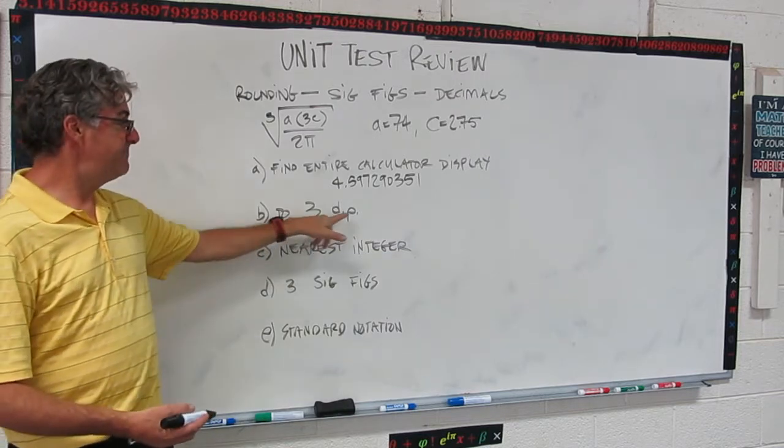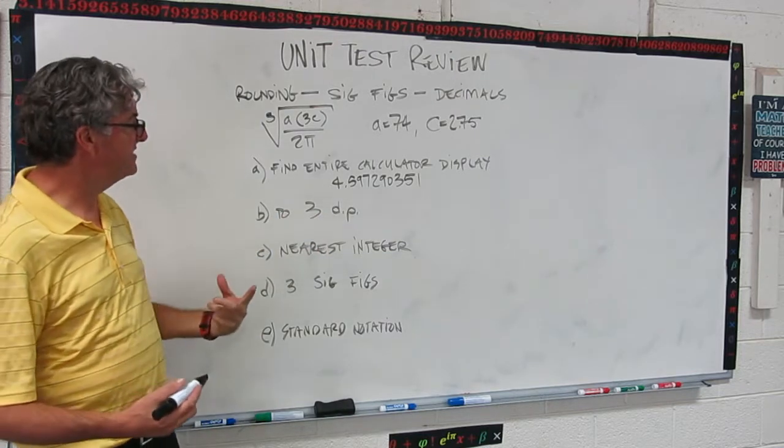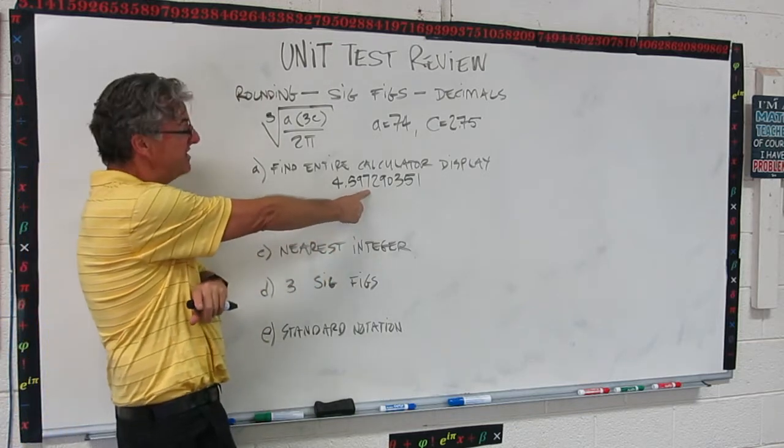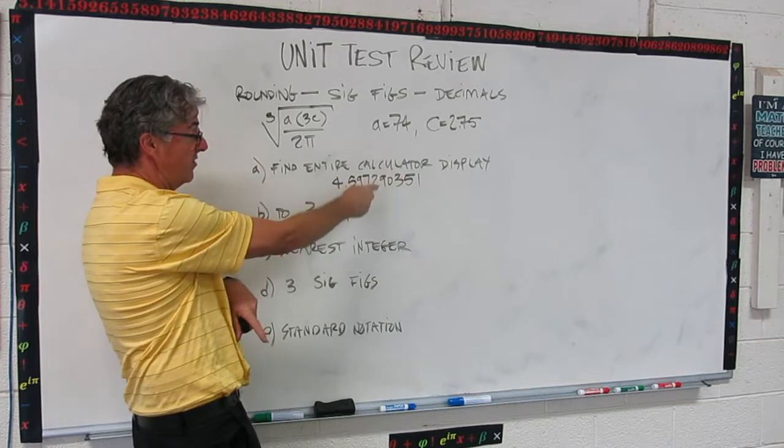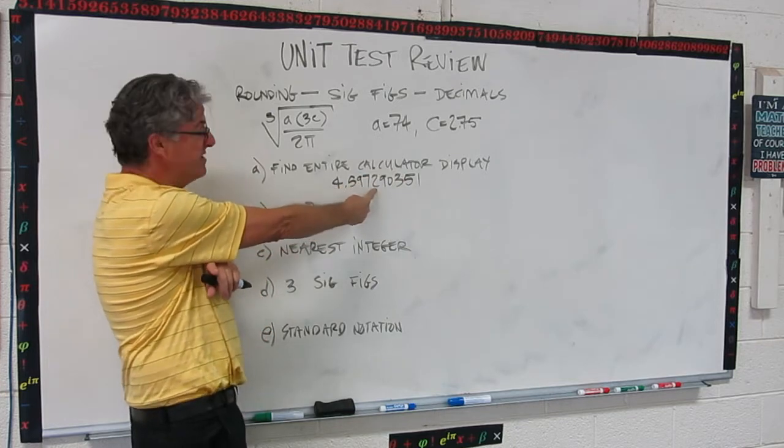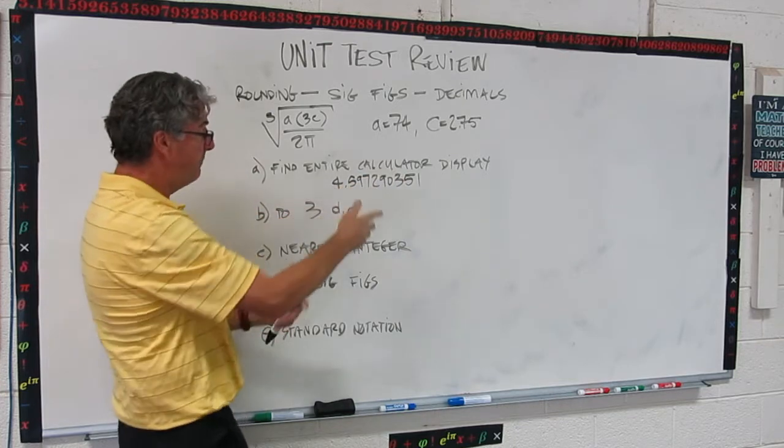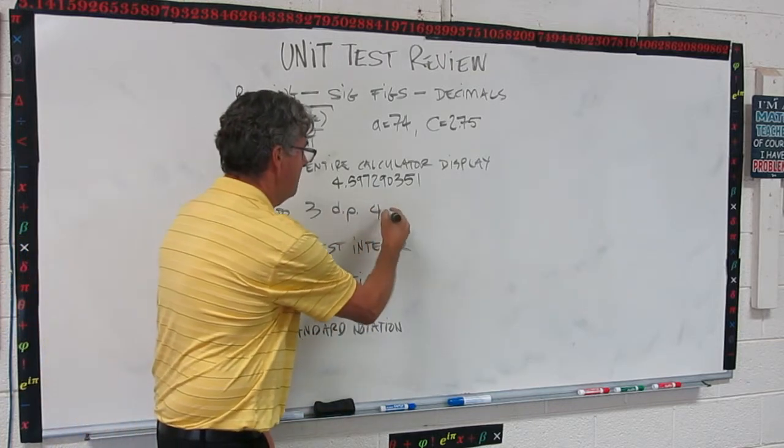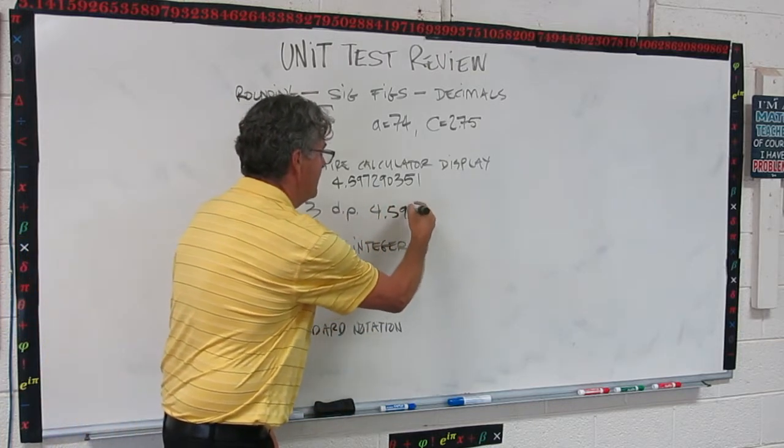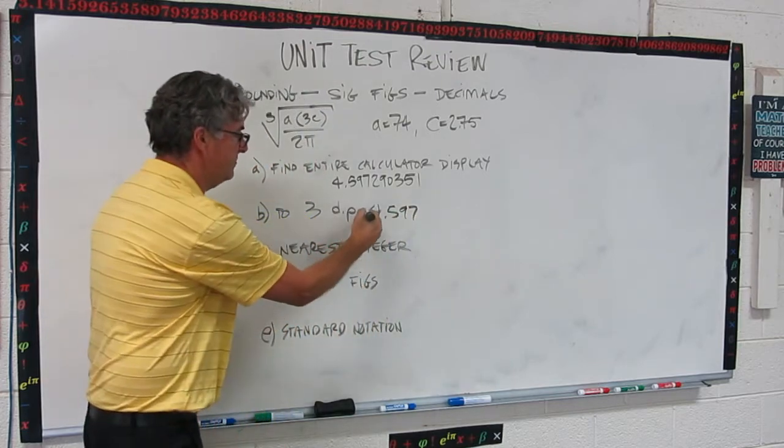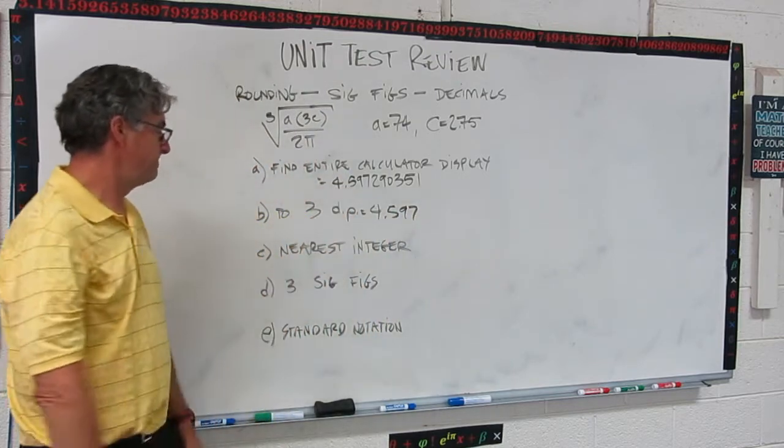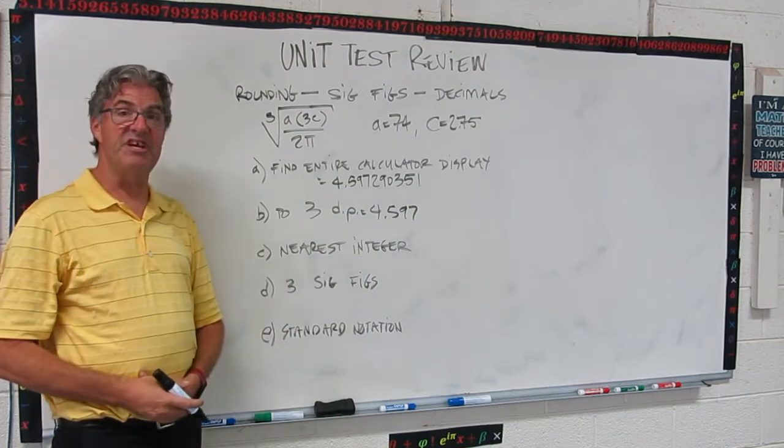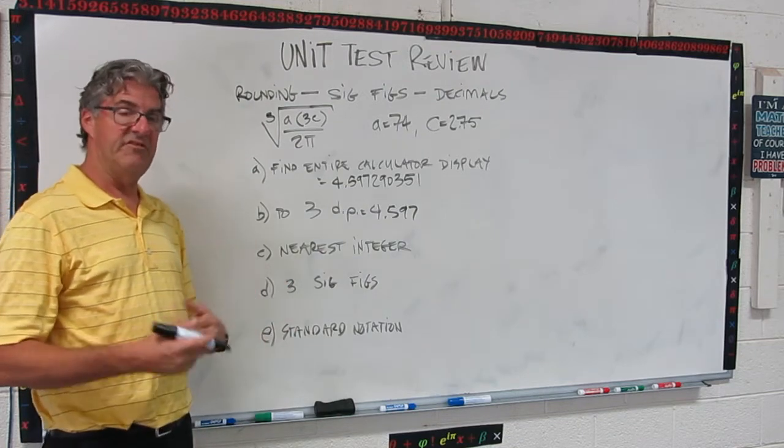Okay, so 3DP means three decimal places. So that means we're going to round it to this third decimal. That's where the seven is. So we look to the next one over, the fourth. And if that's five or bigger, we round the seven up. But it's not five or bigger. So this becomes 4.597 right there. Let's put a little equals. Okay, now C, round it to the nearest integer. So pause the video and do that.